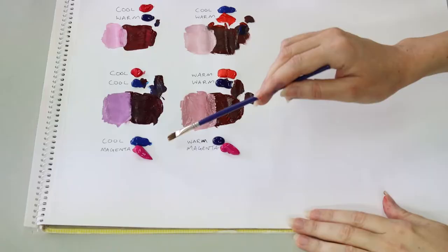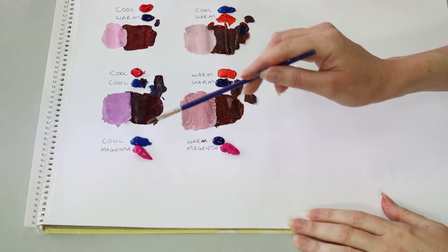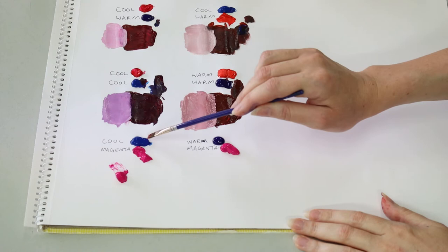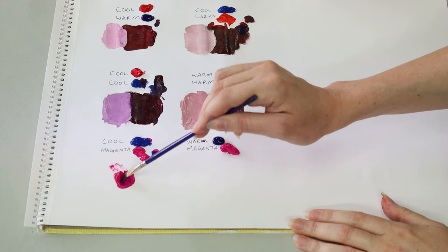So let's start here we've got a magenta and cool blue, like usual I'm going to scoop up a bit of the magenta there and I'm going to get a wee little bit of that blue just a smidge and see what happens.